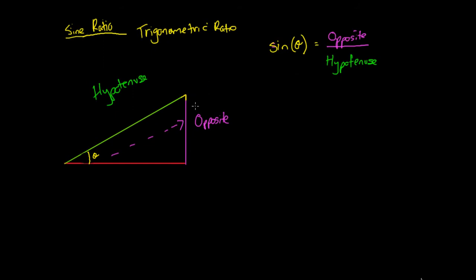The easiest way to show this is with an example. For the opposite, let's say we have a length of 10 and a hypotenuse of 18.02. If you use Pythagoras you can work out that the third side should be about 15. What our sine ratio says is that if these are the observed side lengths — opposite is 10 and hypotenuse is 18 — then there's only one possible angle that can cause this.